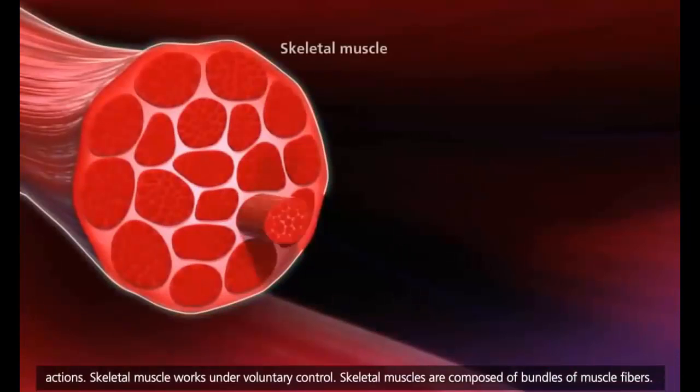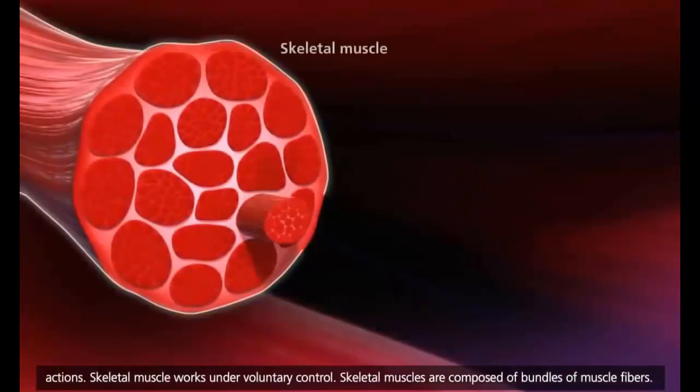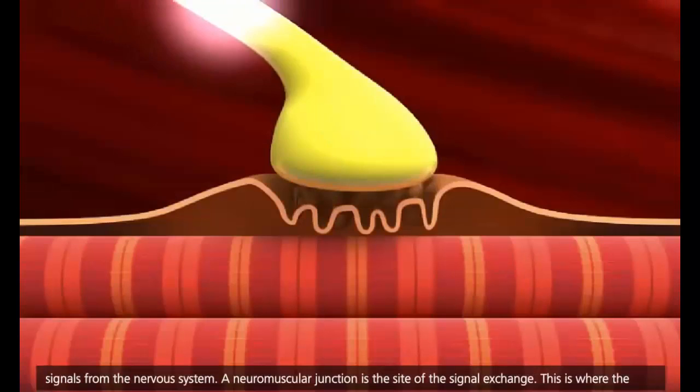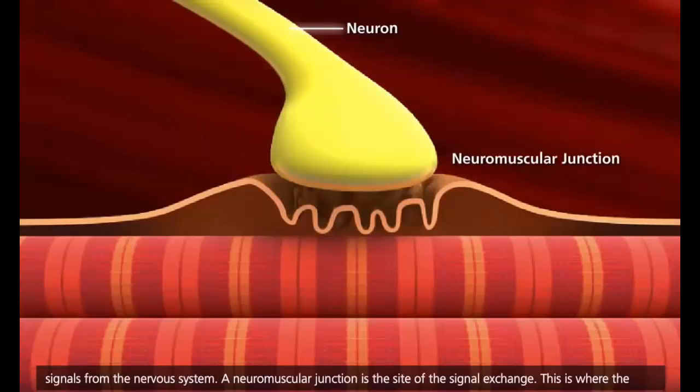Skeletal muscles are composed of bundles of muscle fibers. Muscle fibers are long cylindrical cells containing several nuclei. Muscles will contract or relax when they receive signals from the nervous system. A neuromuscular junction is the site of the signal exchange. This is where the synaptic bulb of an axon terminal and muscle fiber connect.